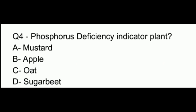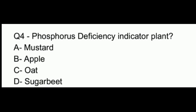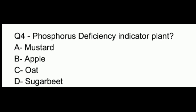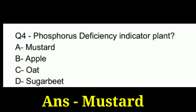Question number 4. Phosphorus deficiency indicator plant is: option A, mustard; option B, apple; option C, oat; option D, sugar beet. The answer to this question is option A, which is mustard.